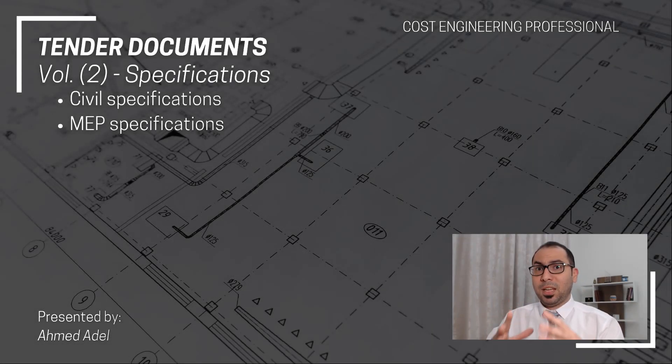Volume two is the specifications of the project. You will find the civil specifications and the MEP specifications. These will be very large files that include everything related to the materials and their specifications that you are going to be using in the project — the warranties required for each material, how the material should be applied, and even the required experience of the subcontractor. For example, the specifications might state that a waterproofing company must have been in the market for the last five years or more, so you cannot bring a new company for that work. Tests that should be done on the materials are also covered in the specifications.